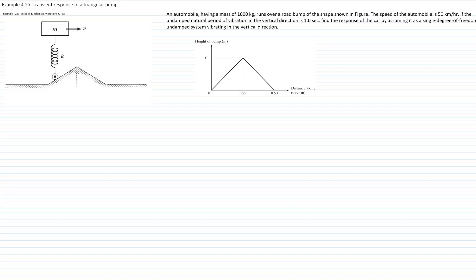Problem 4.25 from the textbook Mechanical Vibration by Rao, 6th edition. We have an automobile with a mass of 1,000 kg that runs over a road bump of a triangular pulse shape as shown in the figure. The speed of the automobile is 50 km per hour. We model the system as an undamped single degree-of-freedom system vibrating in the vertical direction, with a natural period of one second.